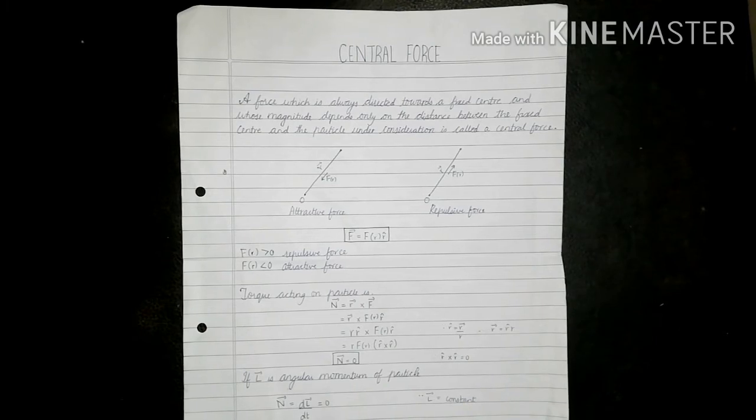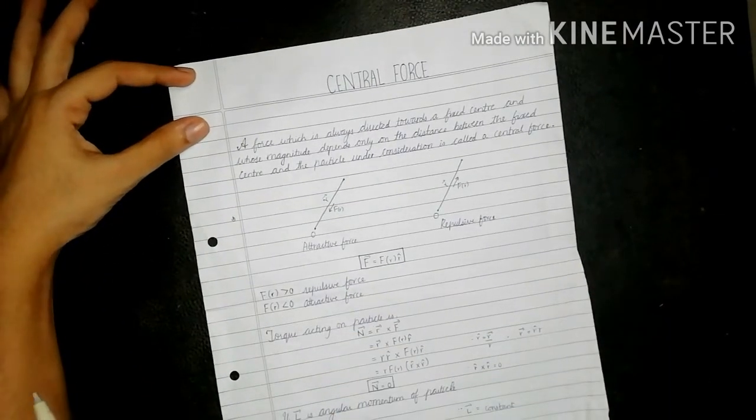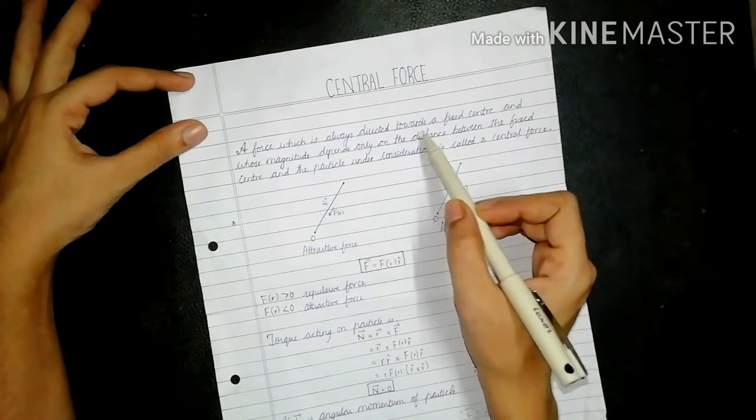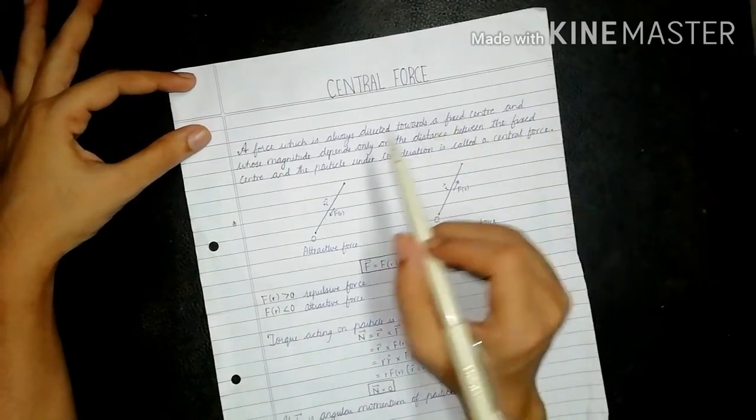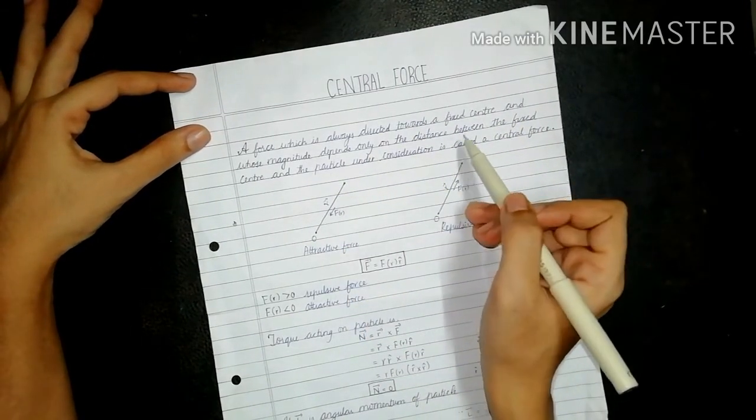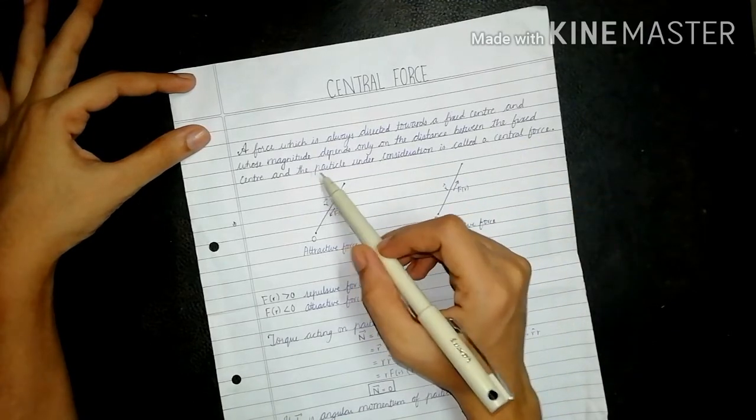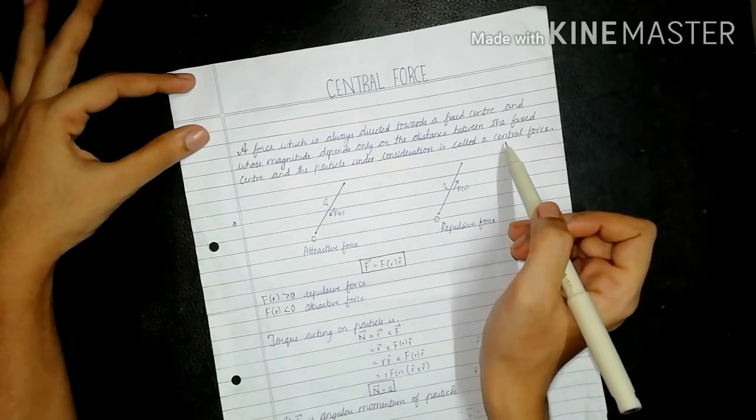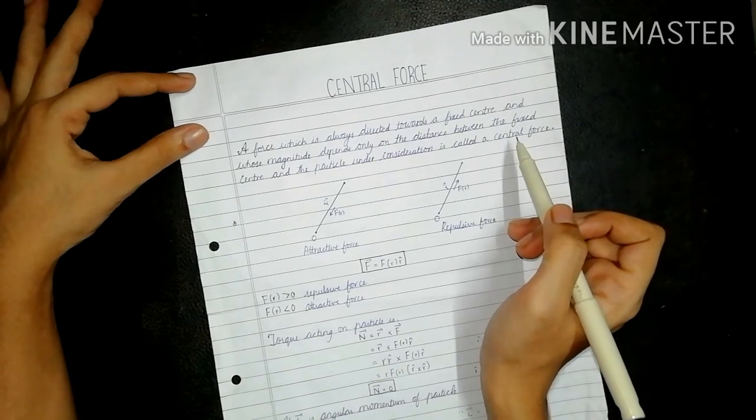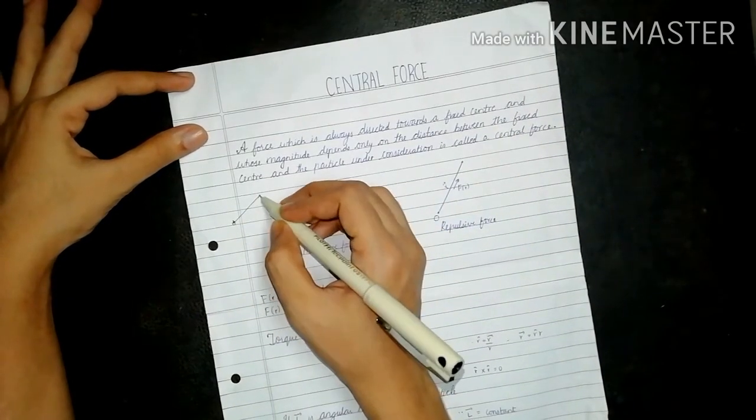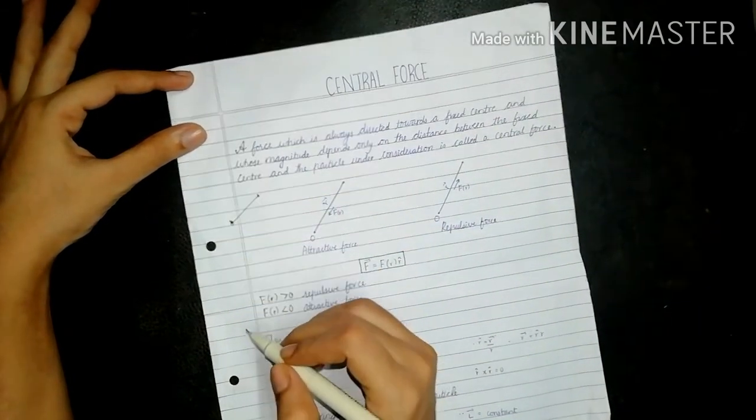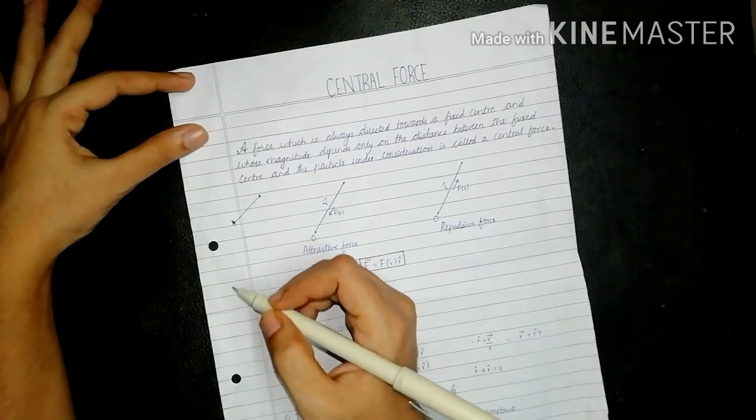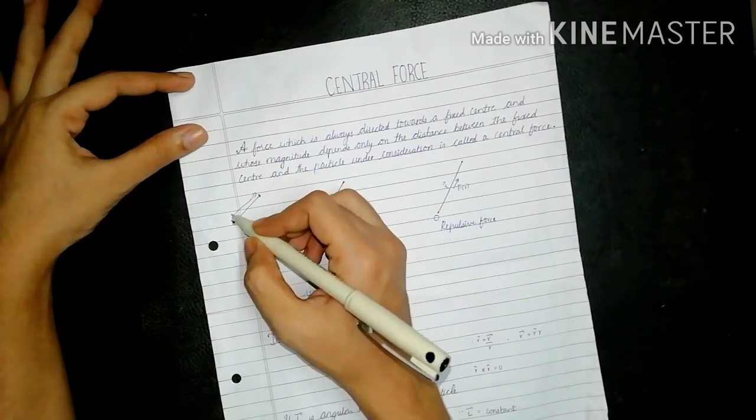First of all, let's look at the definition. According to the definition, a force which is always directed towards a fixed center and whose magnitude depends only on the distance between the fixed center and the particle under consideration is called a central force. This means the magnitude of the central force will only depend on its distance.